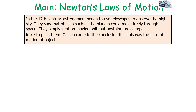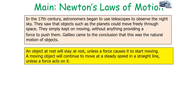In the 17th century, astronomers began to use telescopes to observe the night sky, and they saw objects such as planets which could move freely through space. They simply kept on moving without anything providing force to push them. With this, Galileo came to the conclusion that this was the natural motion of objects.